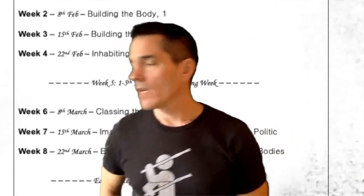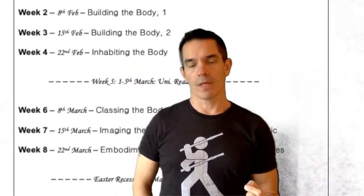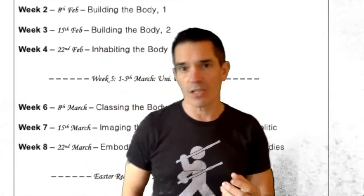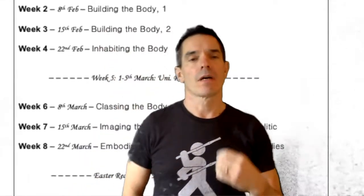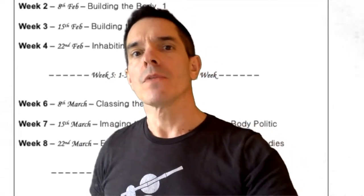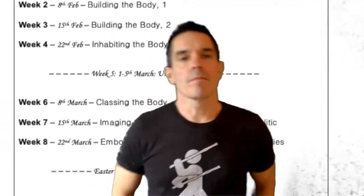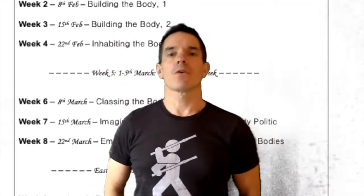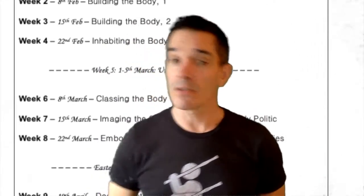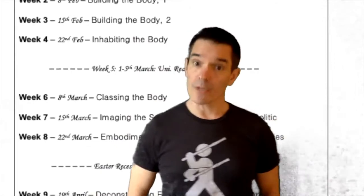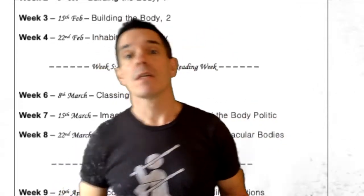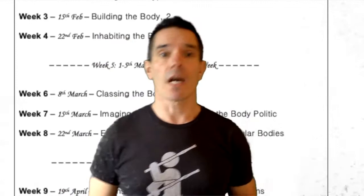Week six is called Classing the Body — again, a play on words: class, classification, and beyond. Week seven is called Imagining the Social Body and the Body Politic, focusing more on questions of society — the body in society, and society imagined in different ways for different reasons as a body.